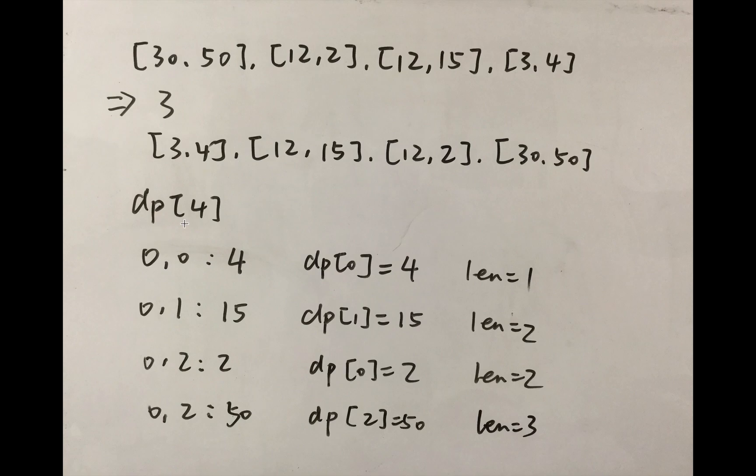See if it already exists in the DP array. If the place we have to insert the height is equal to the length, which means we should insert it at the last, right? So in this case, our longest increasing subsequence increments by 1. So that's basically the idea.